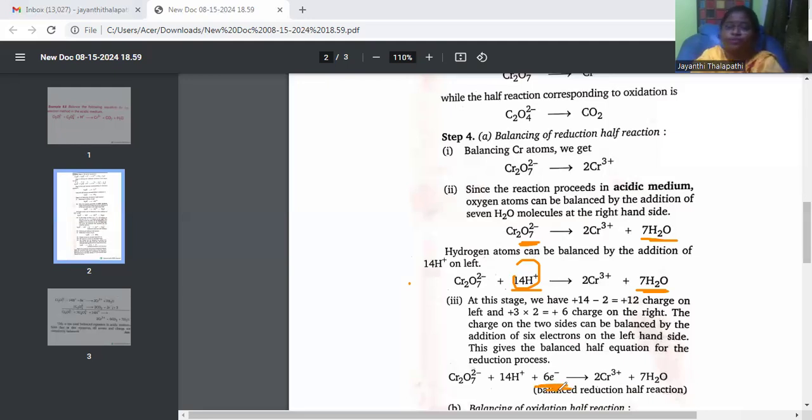Here, they have added 6 electrons. Why we have to add that? If you see the charge over here, 14H+ and there is a 2 minus, that means 12 is the charge over here, plus 12 is the charge in the reactant side. But what about the product side? No charge for water. So chromium alone, 3 plus, there are 2 chromium, that means plus 6 is the charge over here. So how will you balance the charge? By adding plus 6 electrons. By adding electrons, this also becomes plus 6, that means both the sides are balanced.